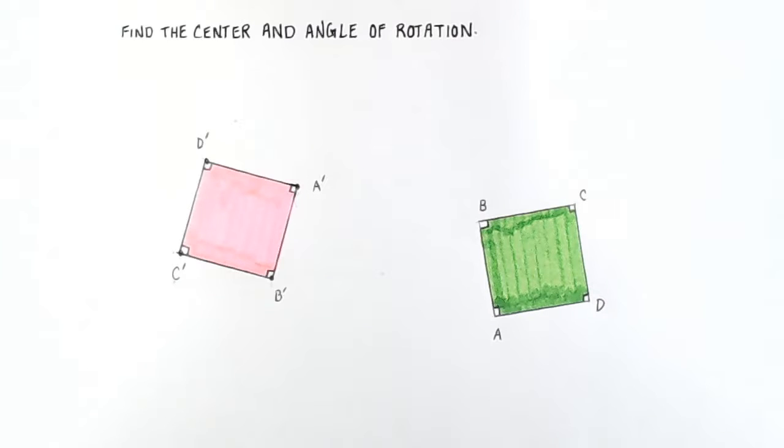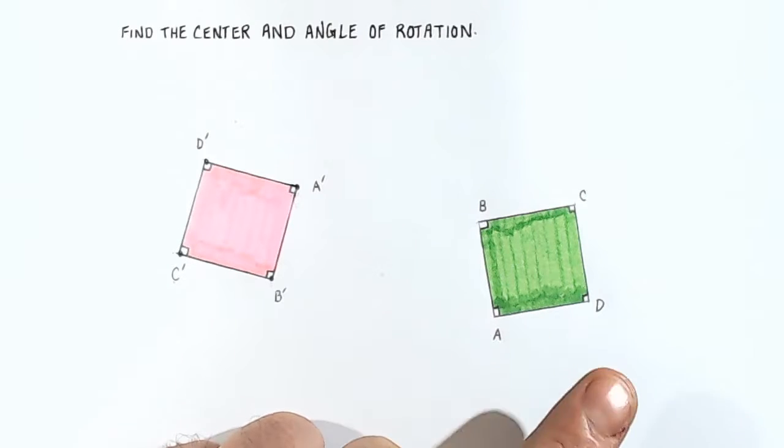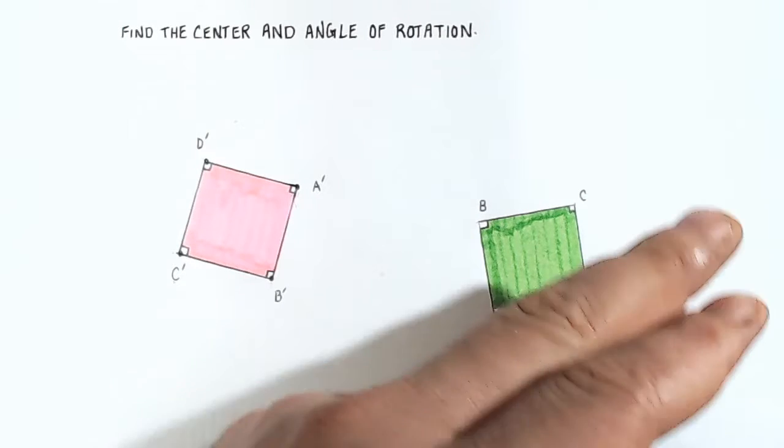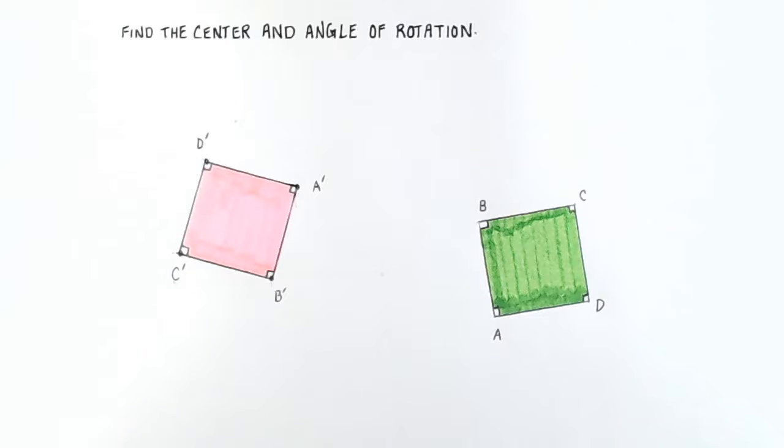So in this example, we are given this square A, B, C, D, and we see that it has been rotated over to A prime, B prime, C prime, D prime.